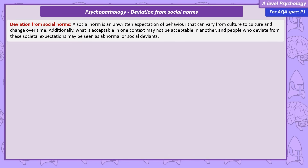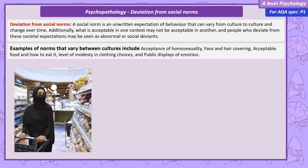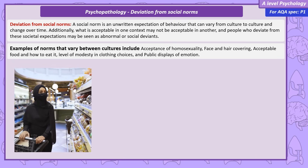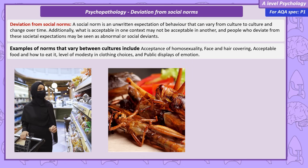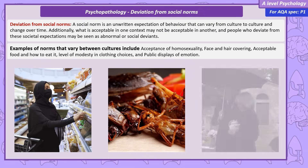One important point to consider is that these norms are dictated by an individual's culture. What might be considered acceptable in one culture may not be seen as acceptable in another. Examples of this can vary greatly between cultures, such as the acceptance of homosexuality, face and hair covering, acceptable food and how to eat it, level of modesty and clothing choices, and public displays of emotion.